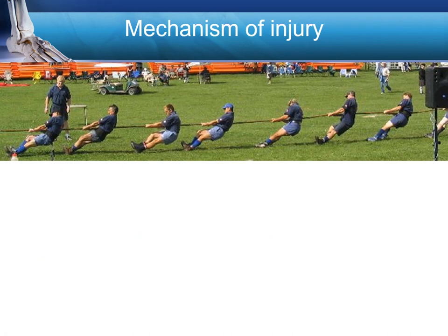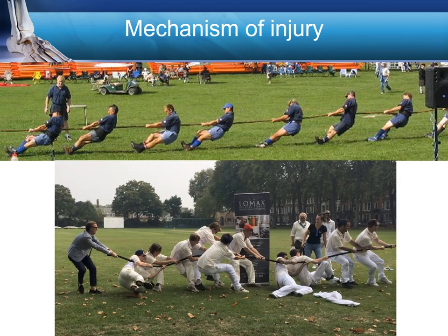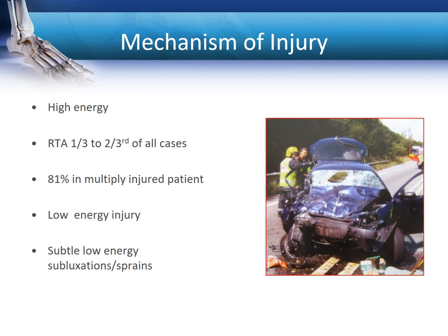The classic mechanism of injury in a Lisfranc is one in which the forefoot is fixed whilst the body rotates over it — this can occur in stud sports as well as in more high-energy situations. Between one-third and two-thirds of all Lisfranc injuries occur in road accidents in the western world, and eight out of ten of these patients are multiply injured, which leads to distracting injuries whereby the Lisfranc injury is missed. A classic low-energy situation would be a curb injury, where someone slips off a curb planting the forefoot in rotation on the hindfoot.